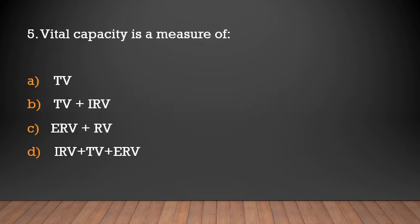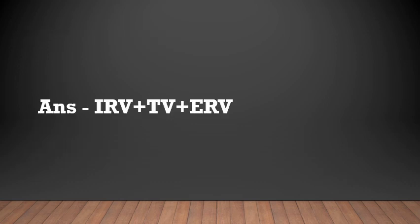Vital capacity is a measure of: TV, TV plus IRV, ERV plus RV, or IRV plus TV plus ERV? The answer is IRV plus TV plus ERV — that is, inspiratory reserve volume plus tidal volume plus expiratory reserve volume.